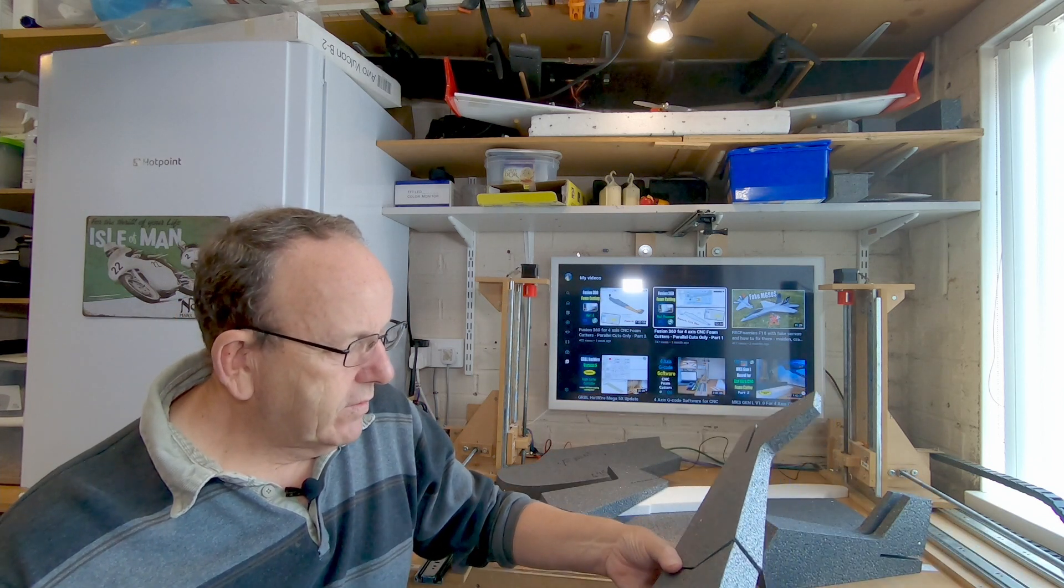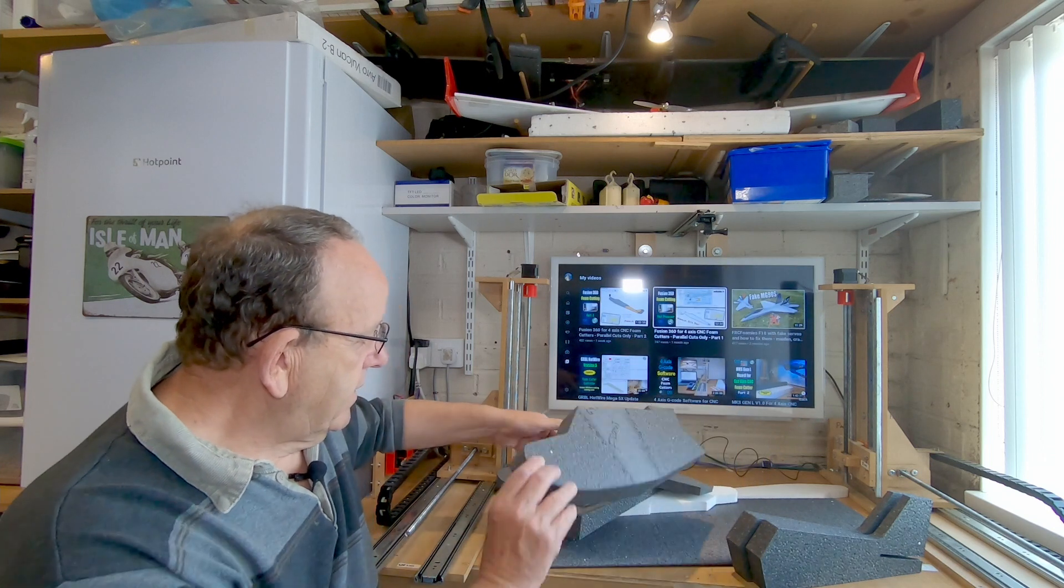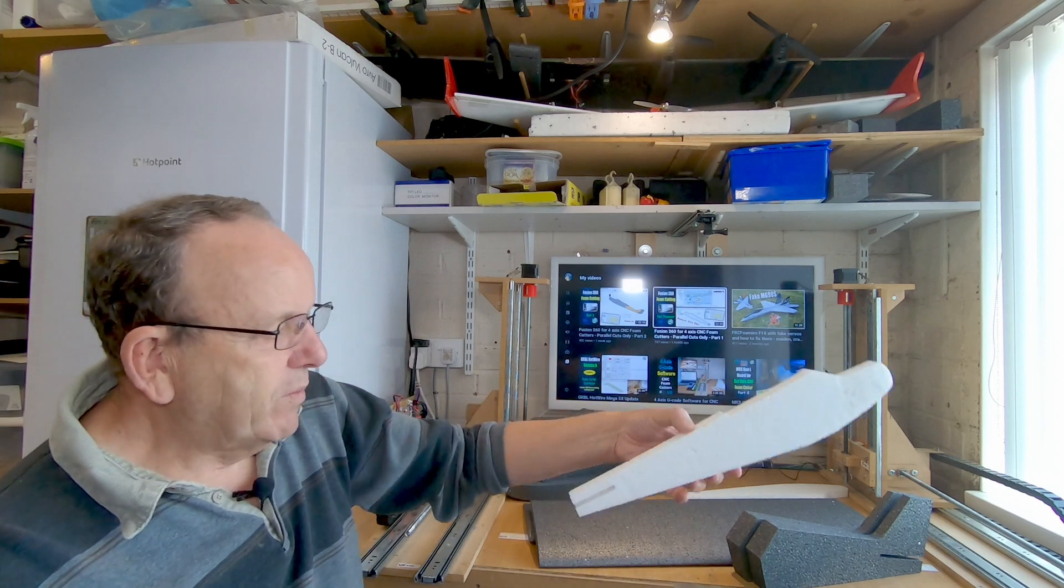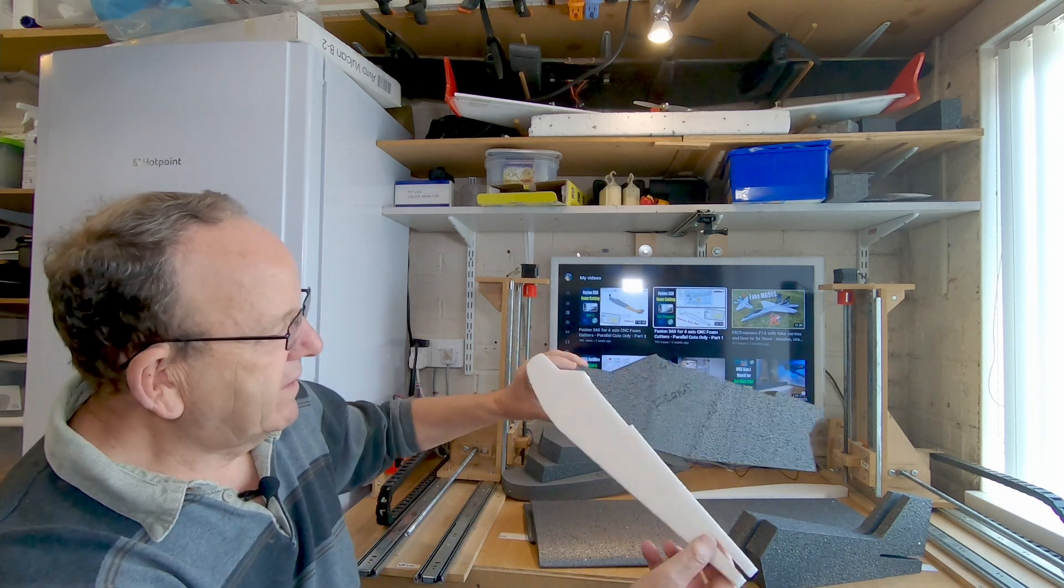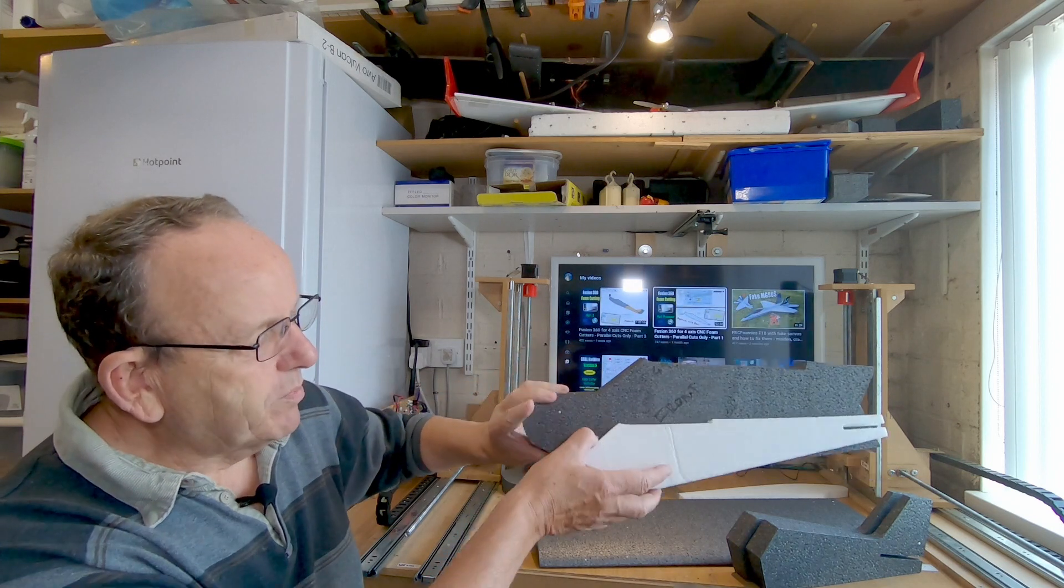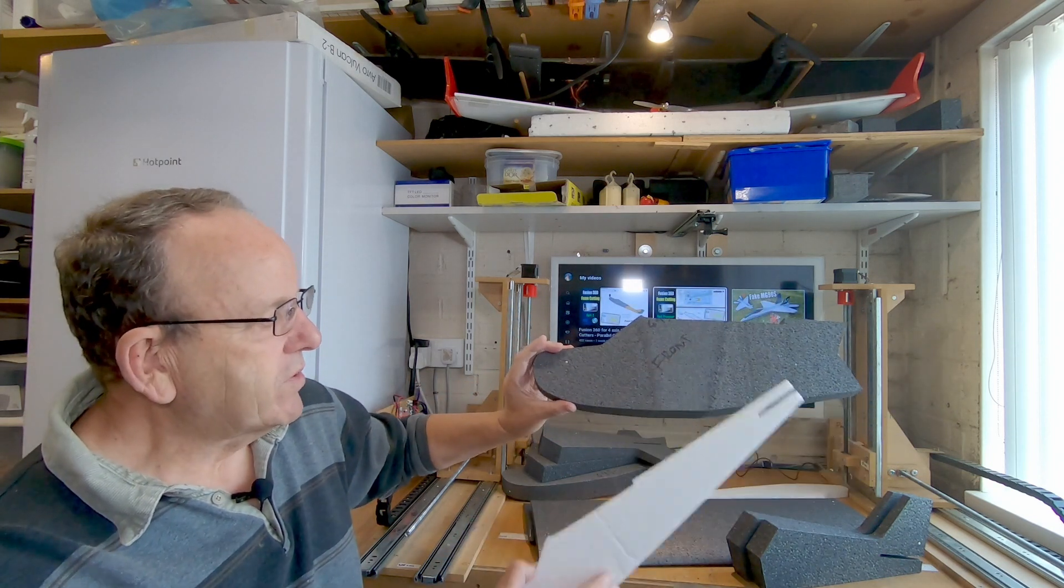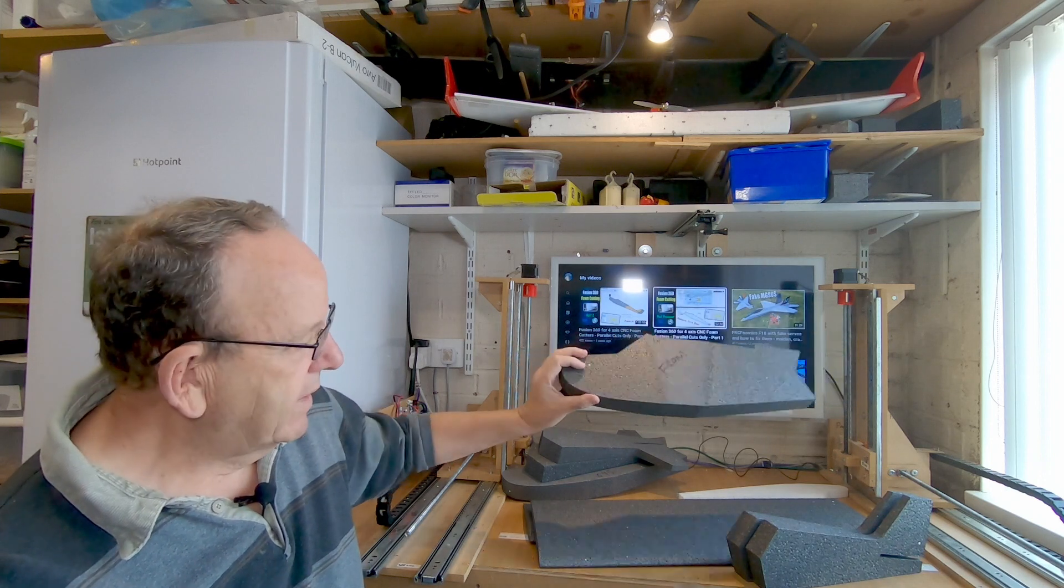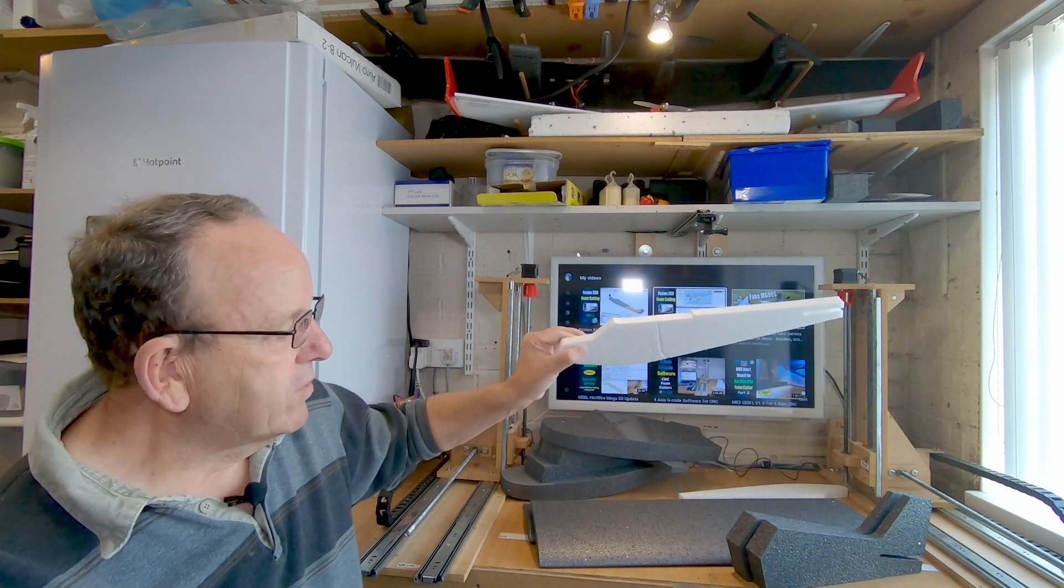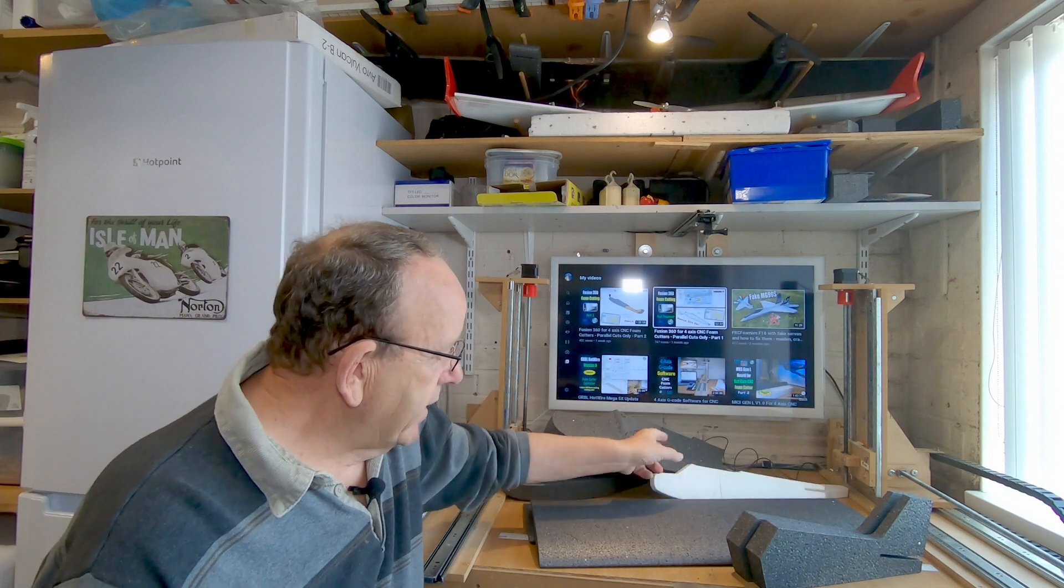So there's the sides, and this was the original one we did in part 1. You can see there's a big difference in size, but that was just a proof of concept and this was making the real thing. Potentially if you wanted to make a small version you could use this.